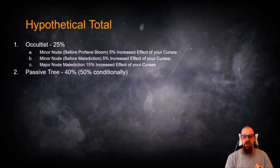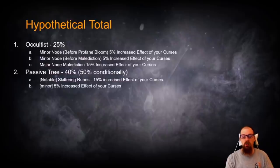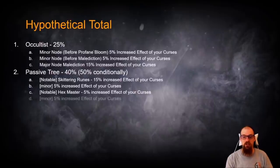Then we go on to the passive tree. We're just going to take the 40% because we don't want to have to worry about any sort of conditional effects and spending mana. So we'll just grab the 40% that's available. We'll grab Skittering Runes for 15% increased effect of curses, minor node, which gives us 5% increased,